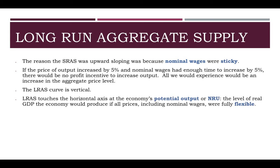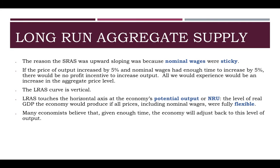Long-run aggregate supply touches the horizontal axis at the economy's potential, or what we've talked about as the natural rate of unemployment — this is where the economy wants to be. The economy will always sort of gravitate back to this long-run output level. When we talk about the long run, we're talking about a period of time when all factors are flexible — prices can adjust, nominal wages can adjust. In the short run, generally, most things remain stuck and the only thing that changes are prices. The economy wants to be in this long-run equilibrium. If the short-run aggregate demand and supply curves are not meeting at the long run, the economy is going to work to get back to its potential.